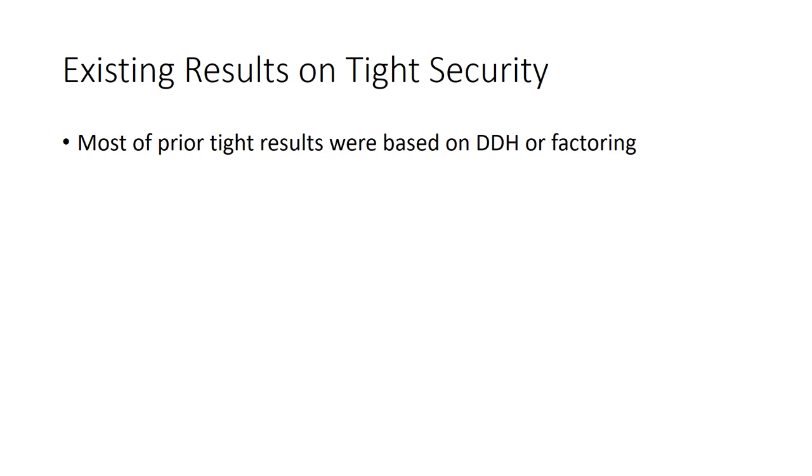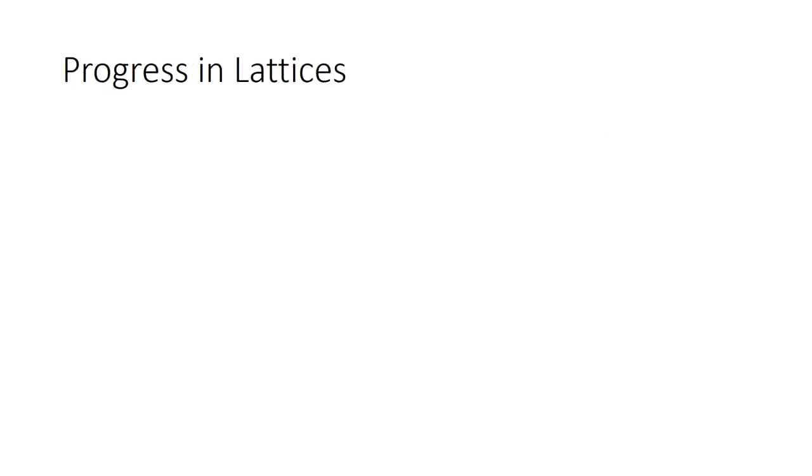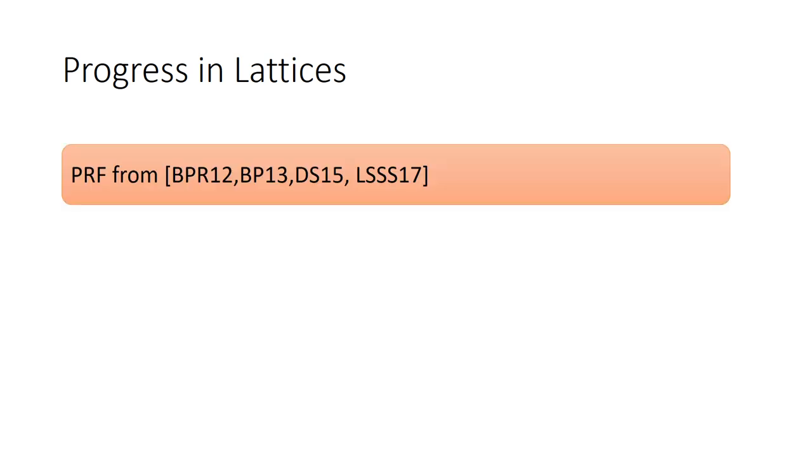This subject has drawn large attention. We have known how to construct almost tight PRF, IBE, PKE, signature, and so on from DDH or factoring. While research in this line is active, most results were with respect to assumptions on groups or factoring. For other important or post-quantum assumptions, such as lattices, only a few results are known even for almost tight security.